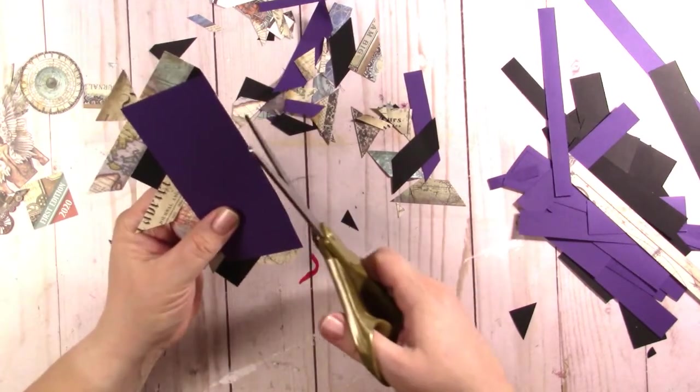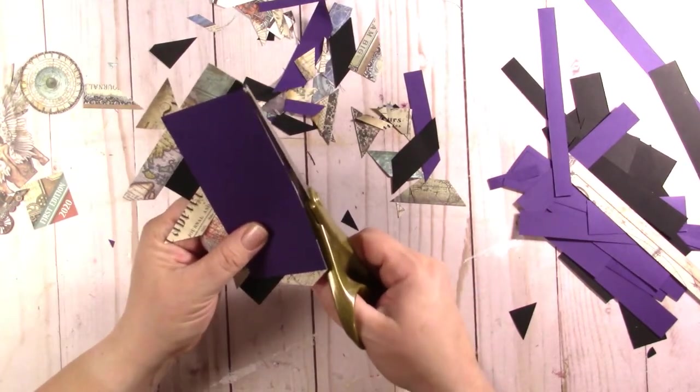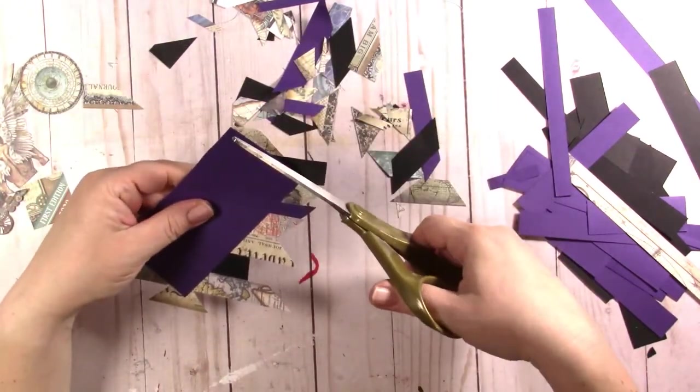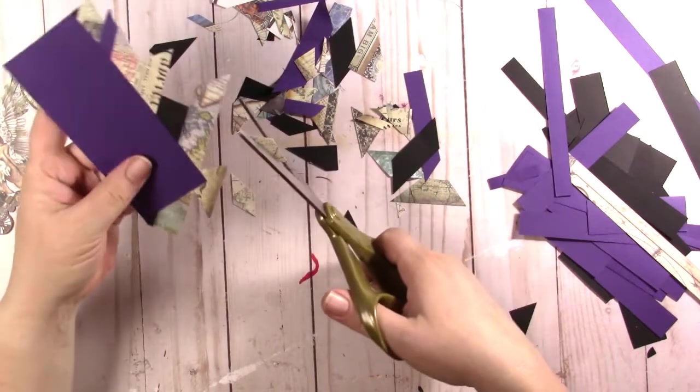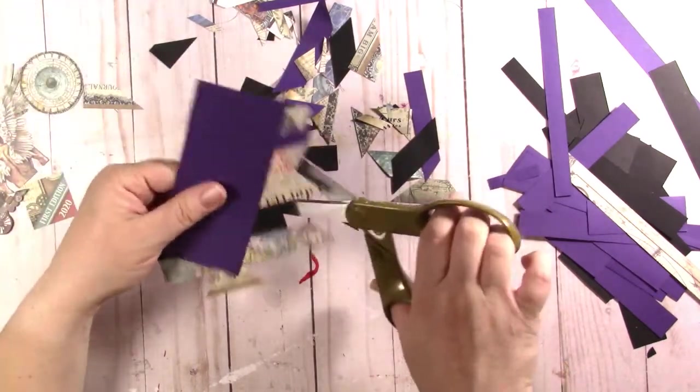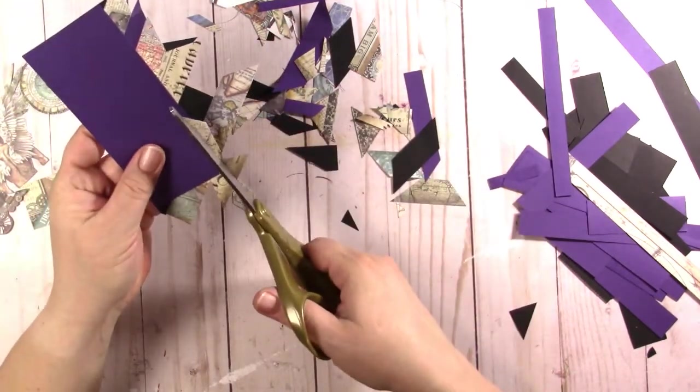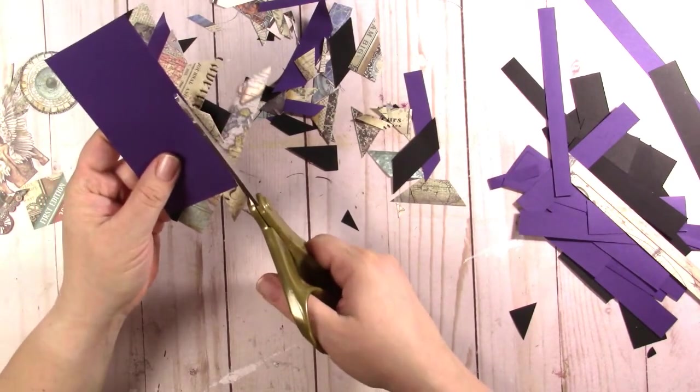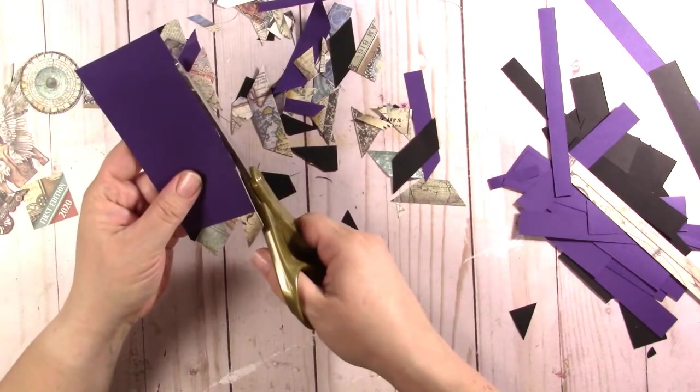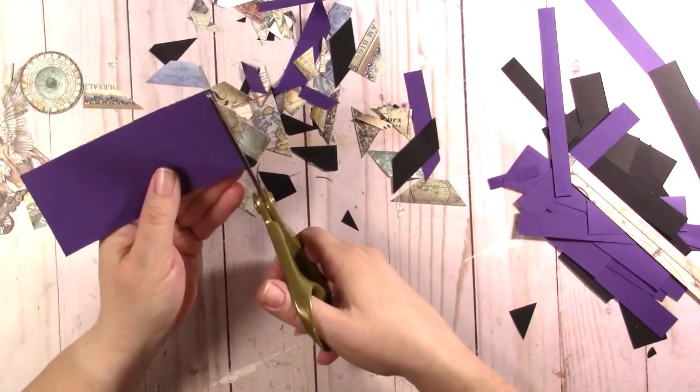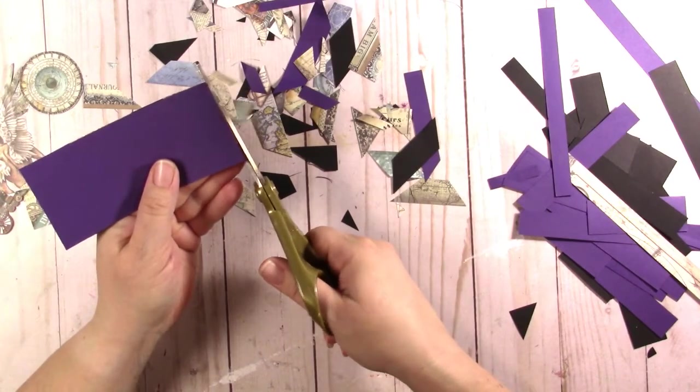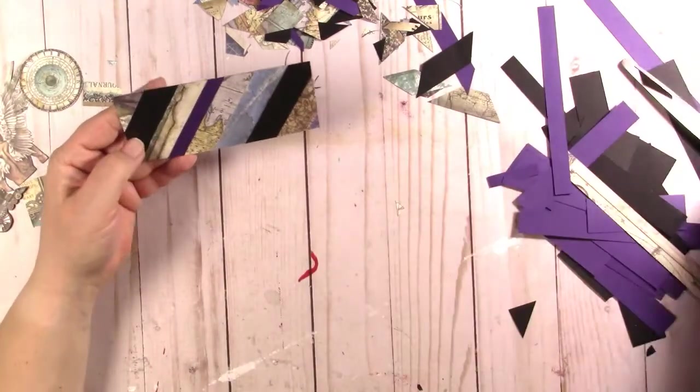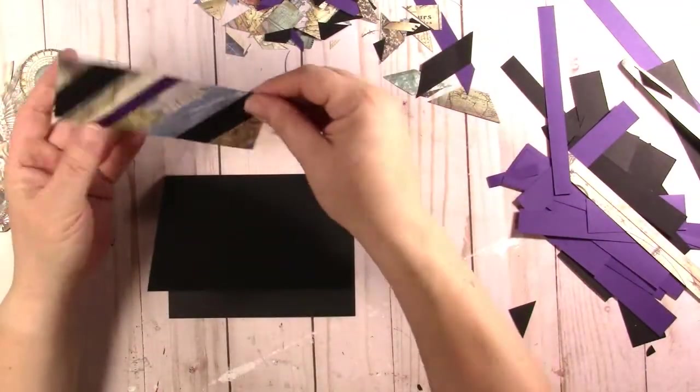You can use your paper trimmer for this. I'm not doing a very good job here. And there we go. So there's that. And that is the paper quilting part of this card.